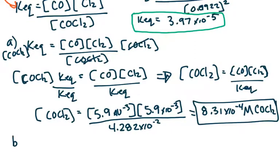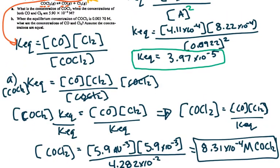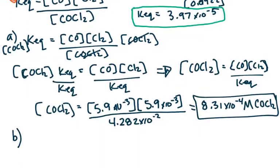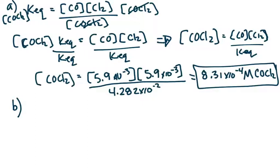I'm going to do part B so you have one more example. Part B gives us the concentration of COCl₂ and asks for the concentration of the other species. Importantly, it says to assume the concentrations of CO and Cl₂ are equal. That's important because in a single equation you can't have multiple variables unless you have multiple equations. By allowing them to be the same concentration, we can use a single variable — similar to how we could have written 5.9×10⁻³ squared since they were the same.